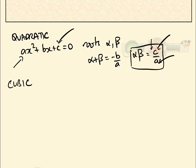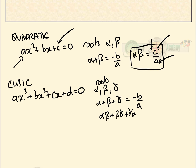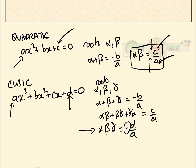For a cubic, ax³ + bx² + cx + d = 0 with roots alpha, beta, gamma: the sum alpha + beta + gamma equals -b/a, the sum of products of pairs equals c/a, and the product of all three roots alpha·beta·gamma equals -d/a. A lot of people get confused — for a cubic, the product of the roots is minus the constant over the first term, whereas for a quadratic it is plus.